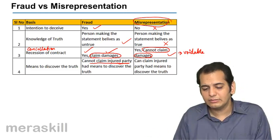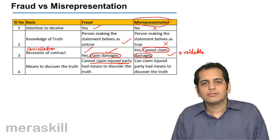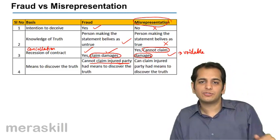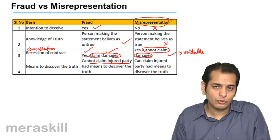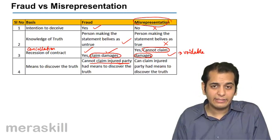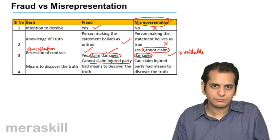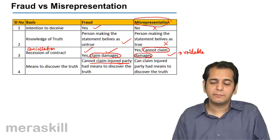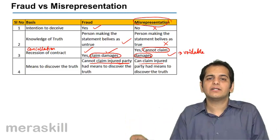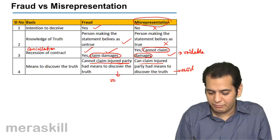But in the case of misrepresentation, the person making the misrepresentation can say: I agree I stated something false; however, I did not intend to deceive you. At the same time, the counterparty had the means to discover the truth, so this contract should not be avoided. Yes — if the counterparty has the means to discover the truth, the party making misrepresentation can claim that, and the contract will remain binding.